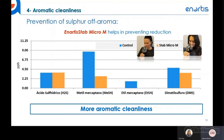Regarding aromatic cleanliness: chitosan and yeast lees absorb off-flavors. They are not the primary tool for fixing reduction problems, but as a side effect, they can remove some mercaptans and dimethyl sulfoxide. With H₂S specifically, no significant effect was observed, but with mercaptans, chitosan and yeast lees could remove a portion of these reductive off-flavors.